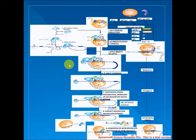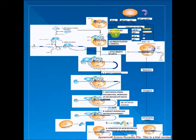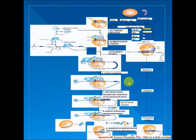Stage 2 is formation of a 43S pre-initiation complex comprising a 40S subunit, EIF1, EIF1A, EIF3, EIF2·GTP·met-tRNA-i, and probably EIF5. Stage 3 is mRNA activation, during which the mRNA cap-proximal region is unwound in an ATP-dependent manner by EIF4F with EIF4B. Stage 4 is attachment of the 43S complex to this mRNA region.